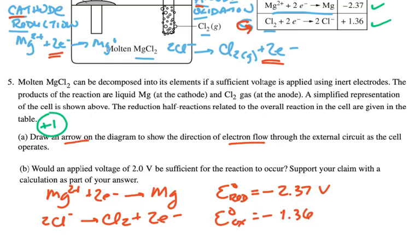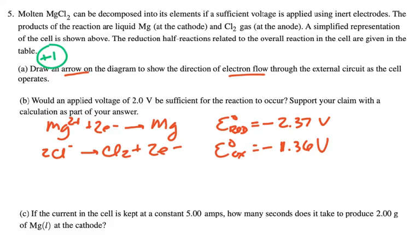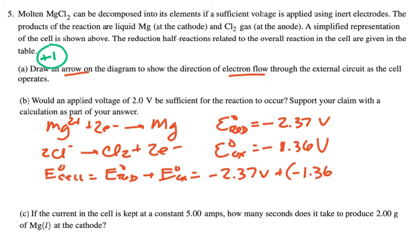So the E of the cell is equal to the reduction potential plus the oxidation potential, so negative 2.37 volts plus negative 1.36 volts, that's going to be negative 3.73 volts.